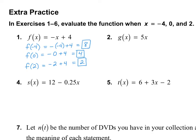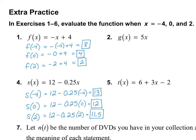Let's take a look at number 4. This time we have the function S of x equals 12 minus 0.25x. Again, we're going to plug in those three numbers: S of negative 4, S of 0, and S of positive 2. Once I plug those in, I get positive 13, positive 12, and positive 11 and a half.